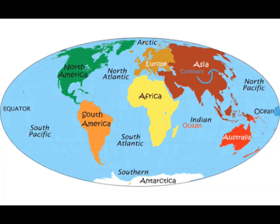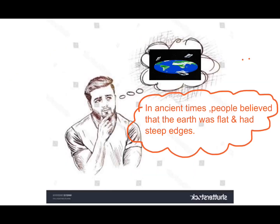Our Earth has land masses and water bodies. The large land masses are called continents and the large water bodies are called oceans. Earth is also known as the blue planet.